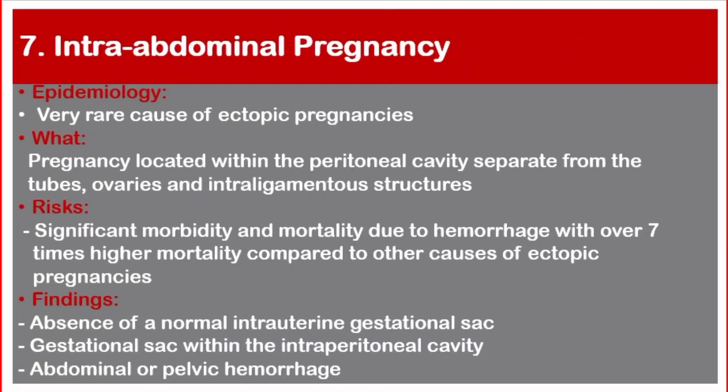Number seven: intra-abdominal pregnancy. Epidemiology — very rare. The pregnancy is located within the peritoneal cavity, separate from the uterus, tubes, ovaries, and intraligamentous structures. Risks: significant morbidity and mortality due to hemorrhage, with over seven times higher mortality compared to other causes of ectopic pregnancies. Ultrasound findings: absence of a normal intrauterine gestational sac, gestational sac within the intraperitoneal cavity, and abdominal or pelvic hemorrhage.